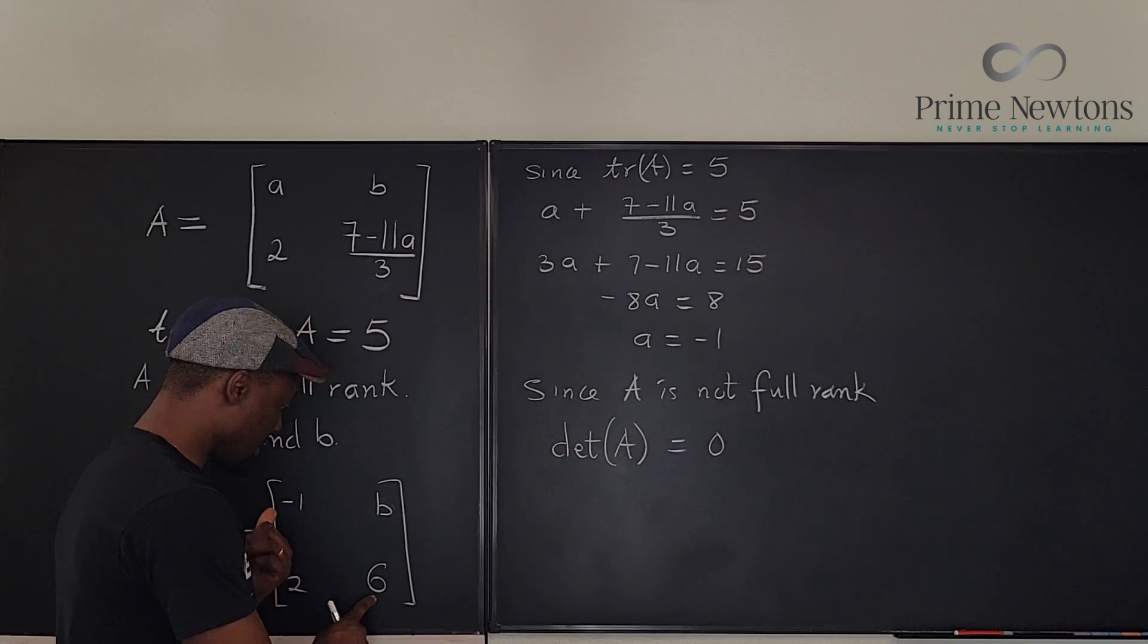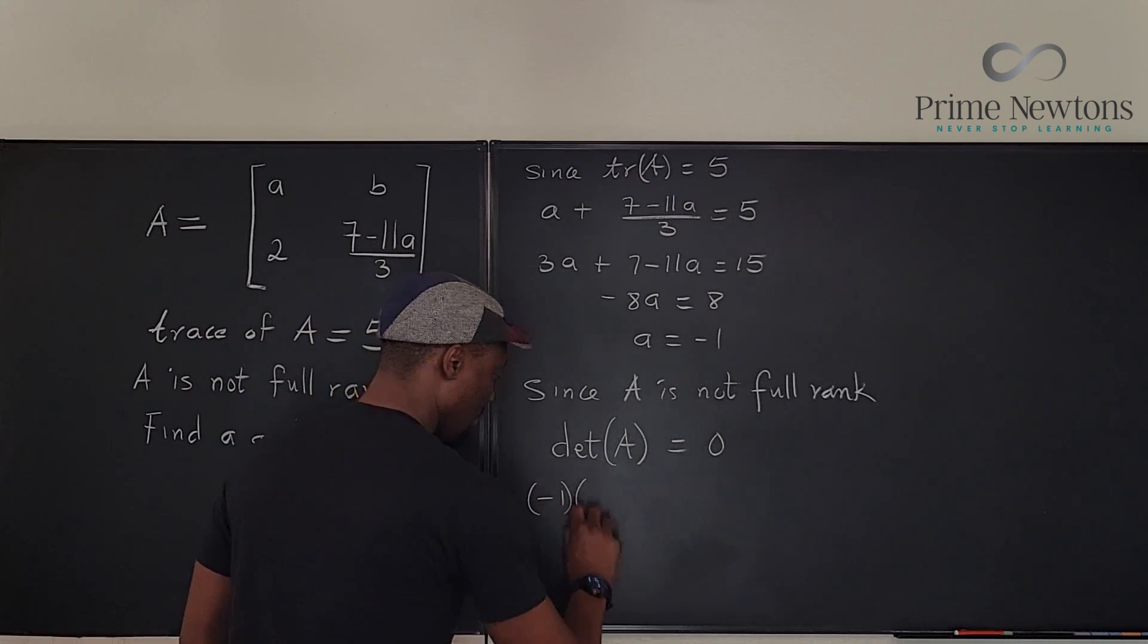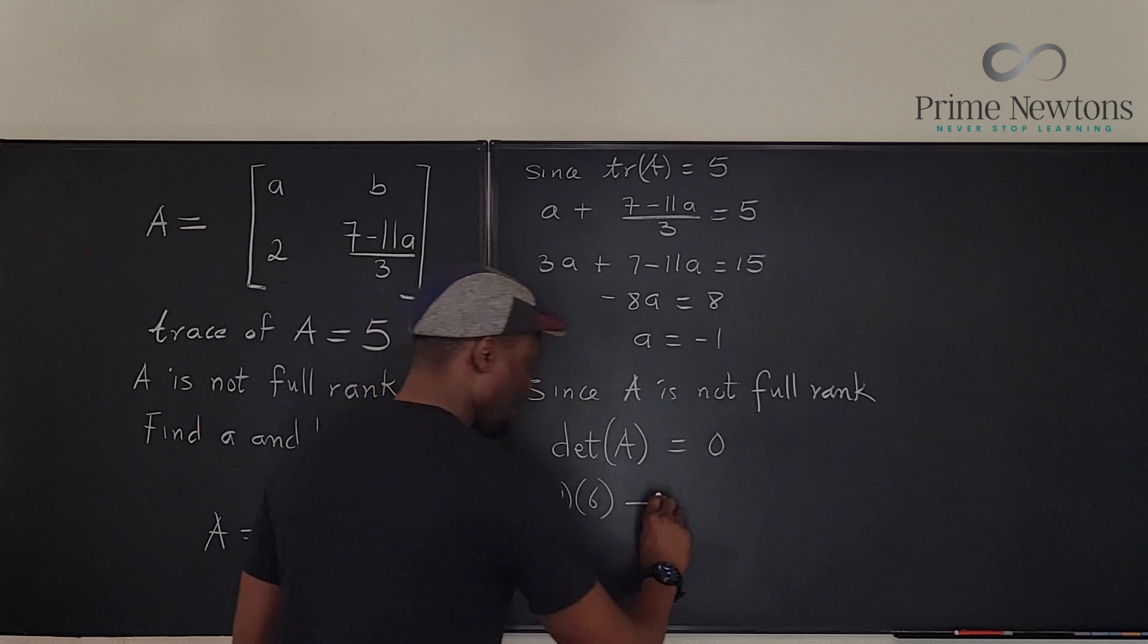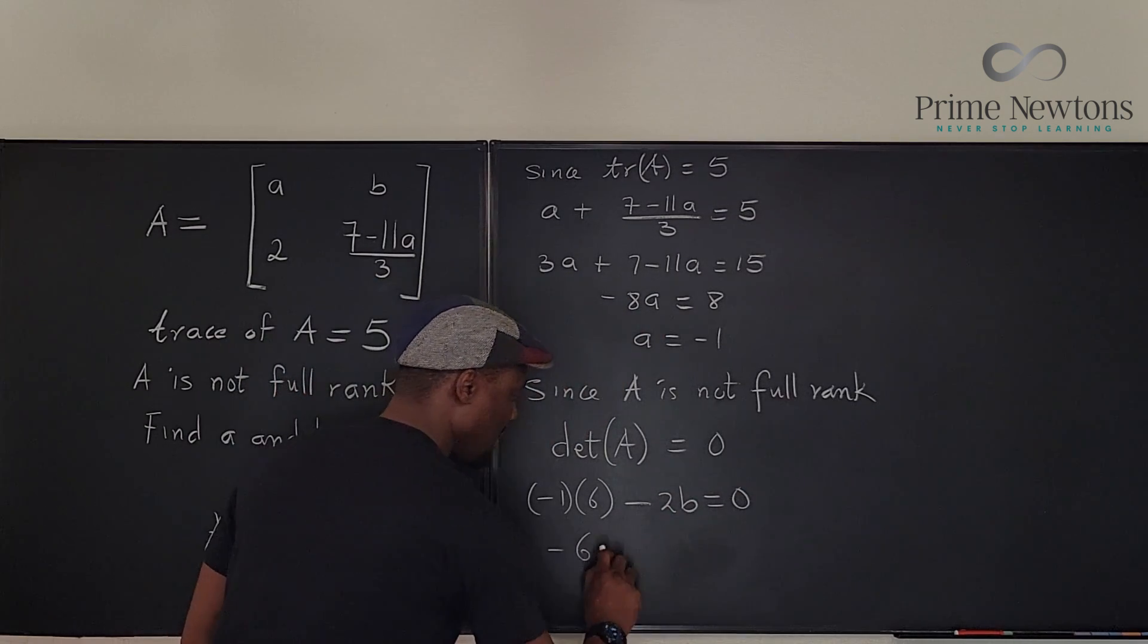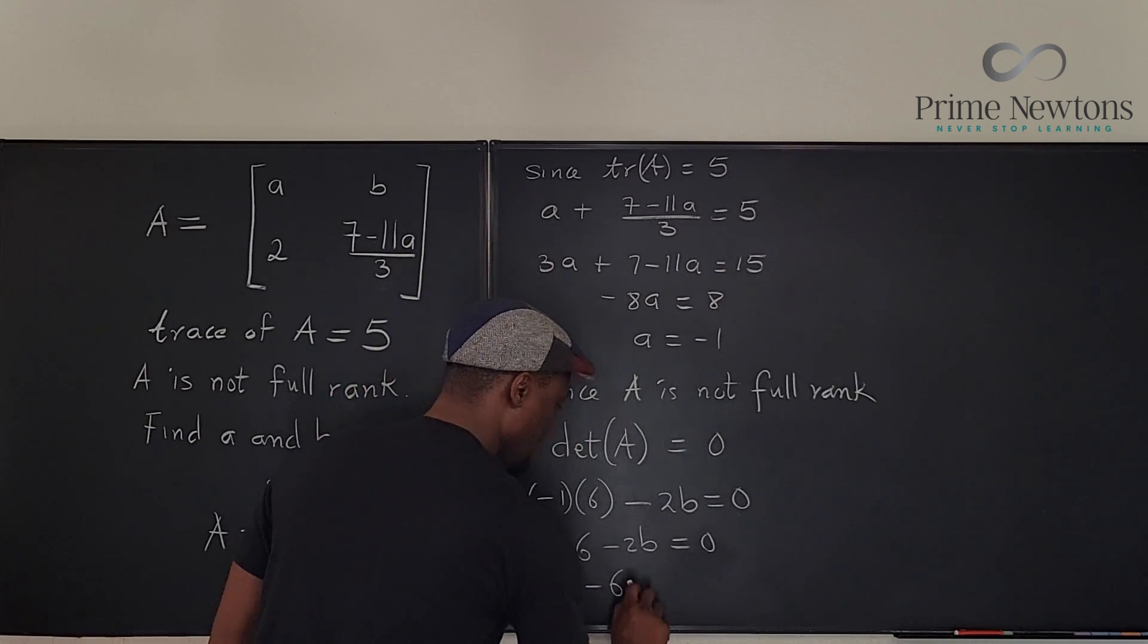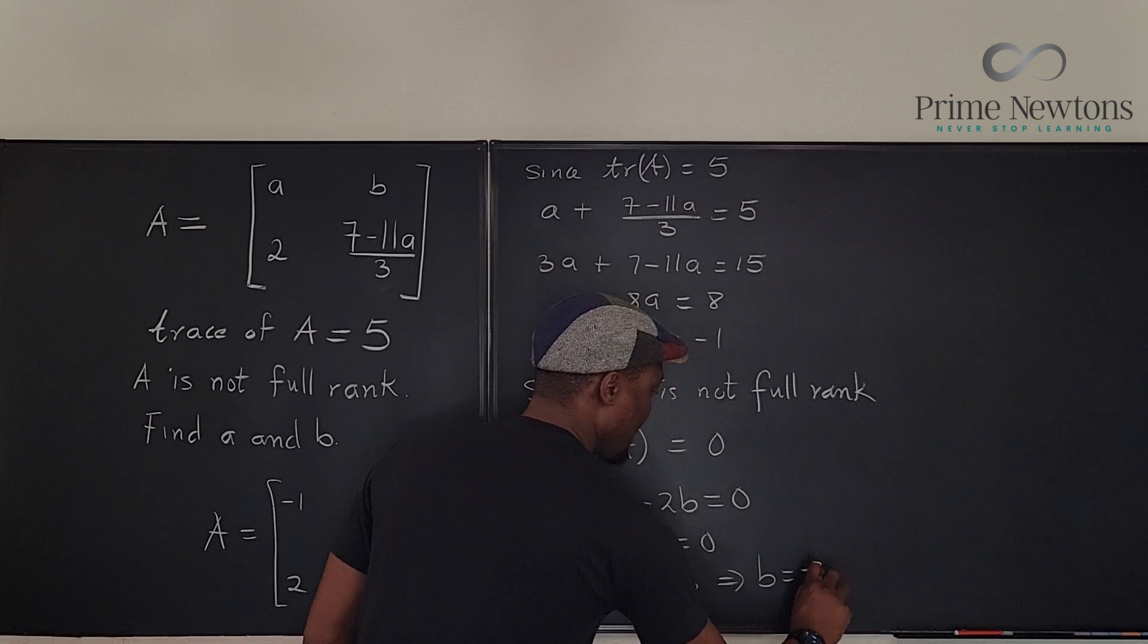So what's the determinant of a? It's minus one times six minus two times b is equal to zero. So minus six minus two b equals zero, which means minus six equals two b, which implies b equals negative three.